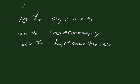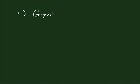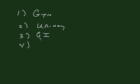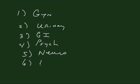Chronic pelvic pain is pain of a duration of greater than six months. There are six areas of possible etiology of chronic pelvic pain: first and most common is gynecology, second involves the urinary tract, third is gastrointestinal, fourth is psychological, fifth is neurological, and sixth is musculoskeletal.